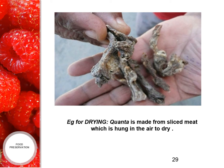This picture indicates an example of drying — the meat is sliced, hung in air to dry and then processed.